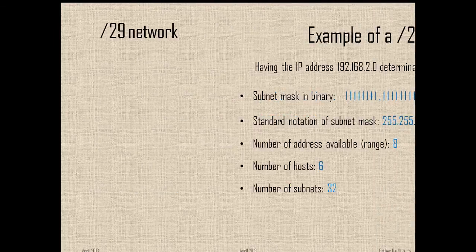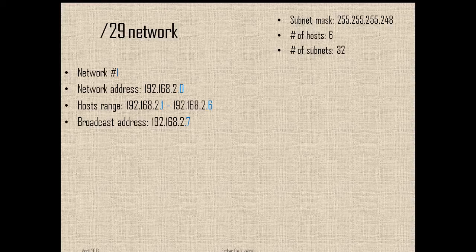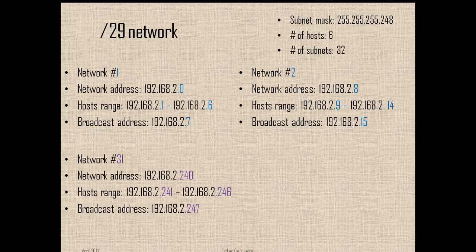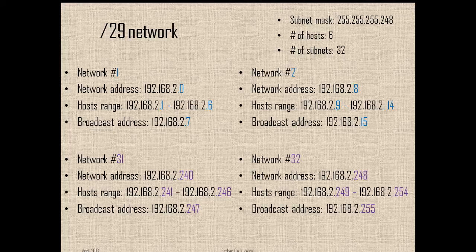With this information we start allocating the IP addresses for each network. So here we have network number 1 starting at 0 and ending at 7. Network number 2 starting at 8 and ending at 15. And again, you do these steps until you find all 32 networks. Network number 31 is going to start at 240 and end at 247, and network number 32 is going to start at 248 and end at 255.